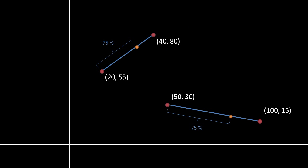Another important use of interpolation is to find corresponding points on separate lines. Here, if the point 20, 55 of the line on the left corresponds to the point 50, 30 of the line on the right, and the point 40, 80 of the line on the left corresponds to the point 1, 15 of the line on the right, then the point which lies 75% of the way from 20, 55 along the left line corresponds to the point which lies 75% of the way from 50, 30 along the right line. Any point which lies n percent along one line corresponds to the point which lies n percent along the other. Note that it matters which endpoint corresponds to which.